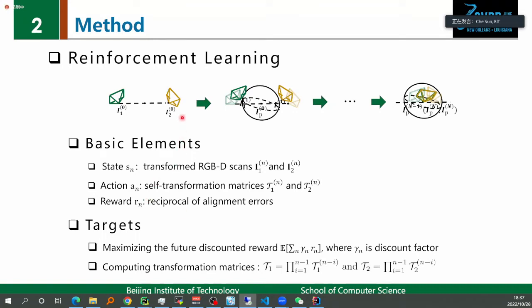In the reinforcement learning, we treat the two RGBD scans as agents and transform them to align with the panorama step-by-step. Reinforcement learning has three basic elements: state, actions, and reward. The state indicates the transformed RGBD scans. The actions are defined as self-transformation matrices at each step. The reward is computed based on the reciprocal of alignment errors. After N time steps, we hope to maximize the future discounted reward, while the transformation matrices solve the registration task.